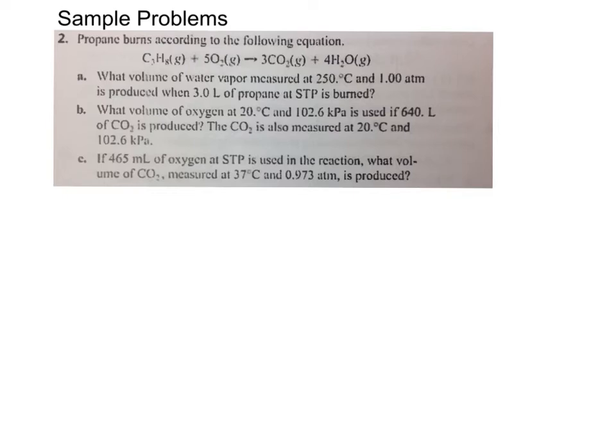So the first thing we need to do is stoichiometry in this case because we know we have three liters of propane. So our start point is three liters of propane C3H8. And we're going to convert that to liters of water. Okay, so we want to see how many liters of water we're going to get as a product from the combustion of that.